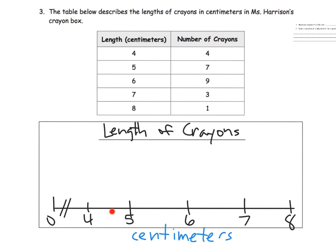There's my lengths. We see that four people have—there are four crayons that are four centimeters: one, two, three, four. We see that seven crayons are five centimeters: one, two, three, four, five, six, seven. We see nine crayons are six centimeters: one, two, three, four, five, six, seven, eight, nine. We see three crayons are seven centimeters: one, two, three. Lastly, only one crayon is eight centimeters long.